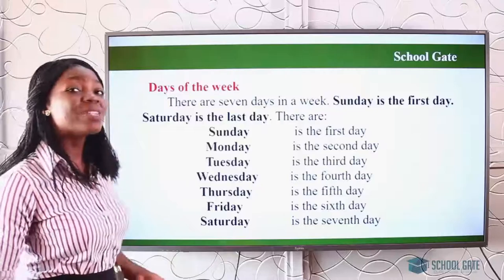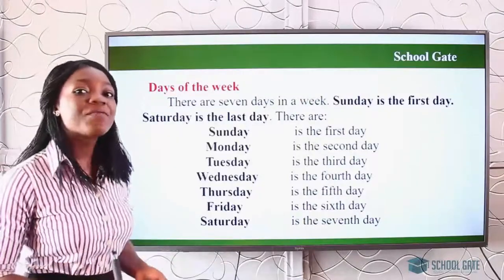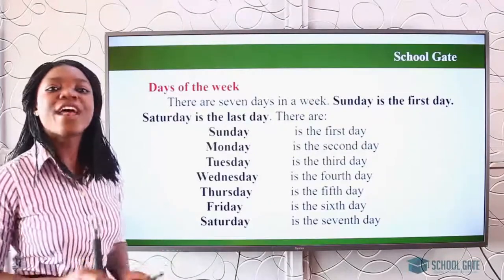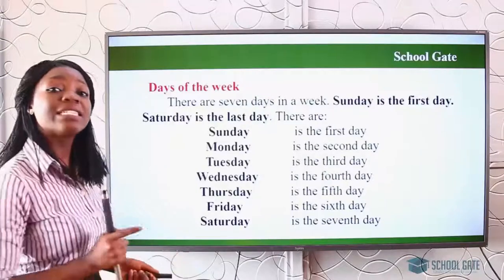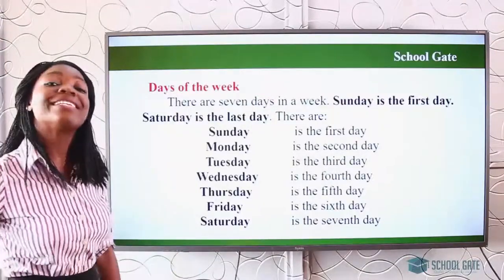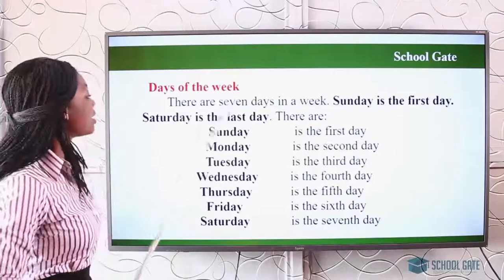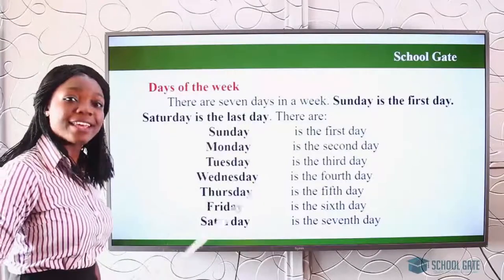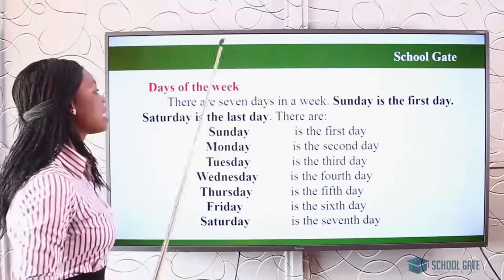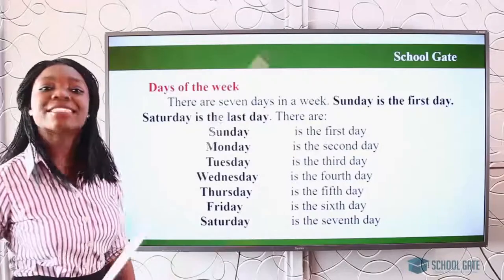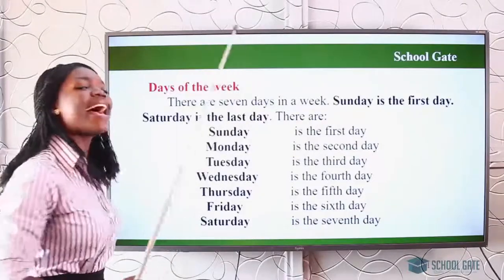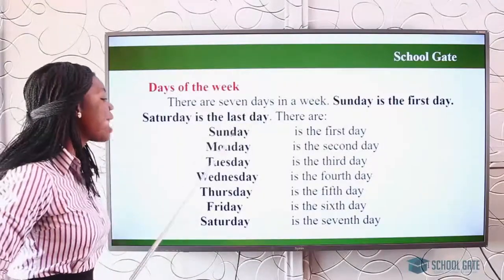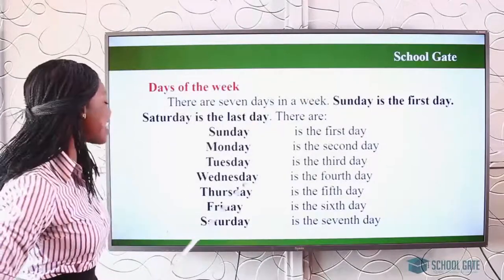There are seven days in a week. There are seven days, there are seven days, there are seven days in a week: Sunday, Monday, Tuesday, Wednesday, Thursday, Friday, Saturday. There are seven days in a week: Sunday, Monday, Tuesday, Wednesday, Thursday, Friday, Saturday.